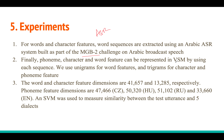These four feature sequences are represented using VSM feature vectors. They create unigram features for words and trigram features for characters and phonemes. The resulting dimensions are: ~41,000 for word features, ~13,000 for character features, and ~47,000 for phoneme features — varying by language: 46,000 for Czech, 50,000 for Hungarian, 51,000 for Russian, and 33,000 for English. There are five dialect classes.